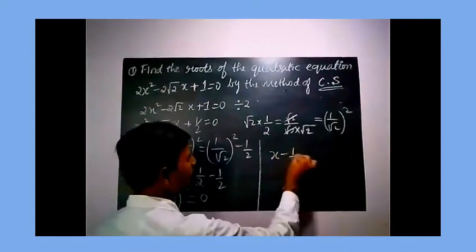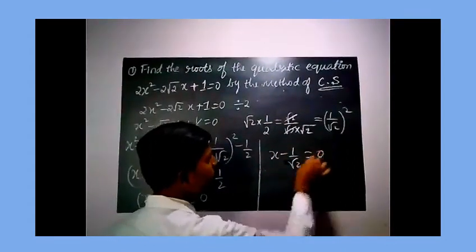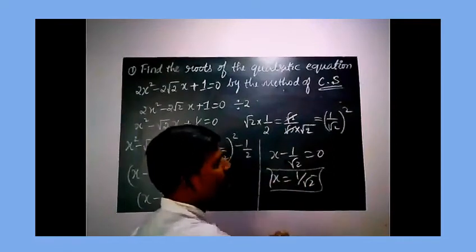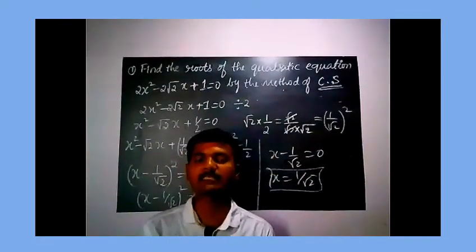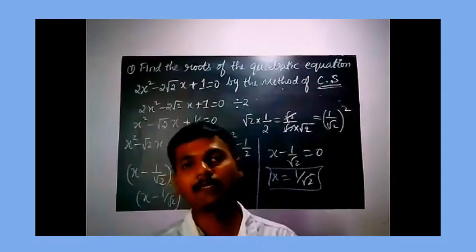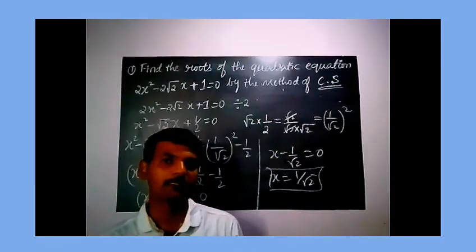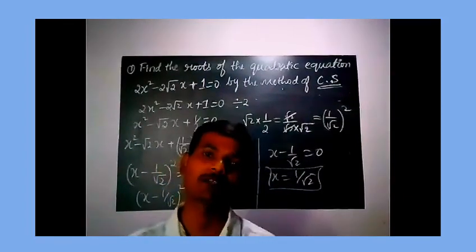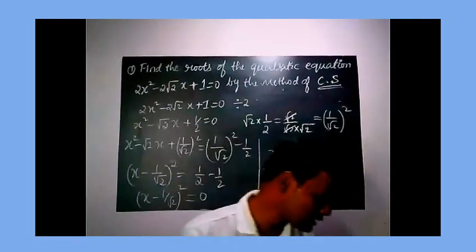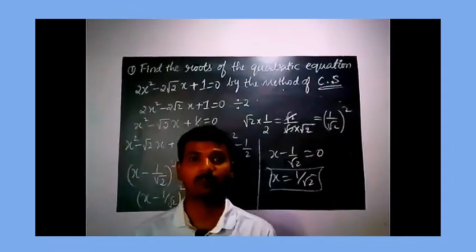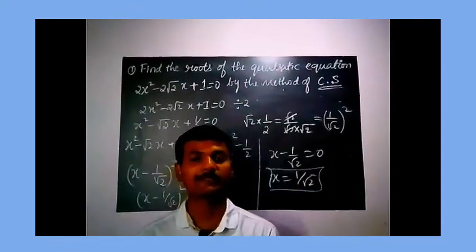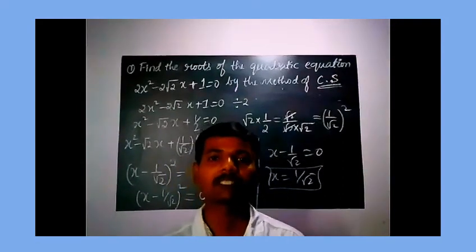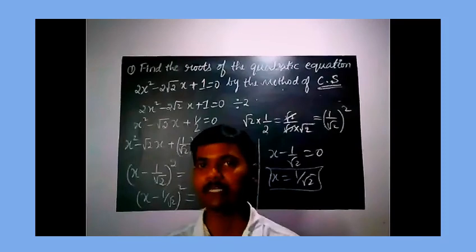So (x minus 1/√2)² equals 0, giving x minus 1/√2 equals 0, therefore x equals 1/√2 is the root for the given quadratic equation. This is how we find roots using the method of completing the square — one of the important methods for finding roots of quadratic equations. Keep practicing, keep watching the channel, and subscribe for more videos. Thank you.